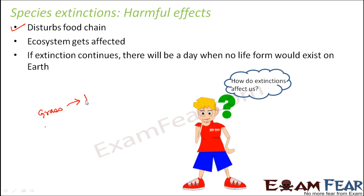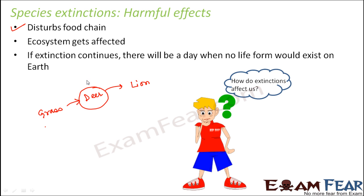Let us take a simple food chain example: grass is eaten by deer, which is eaten by a lion. Now suppose the deer becomes extinct — if all deer disappear, the food chain will be disturbed because the amount of grass will increase greatly and the lions will have nothing to eat.